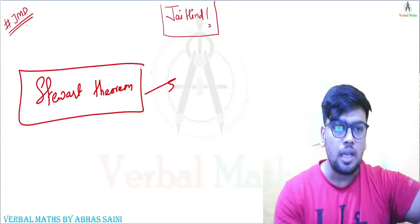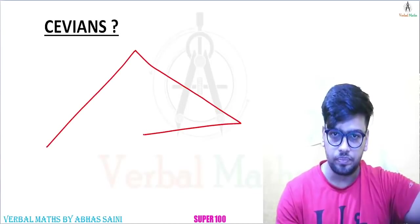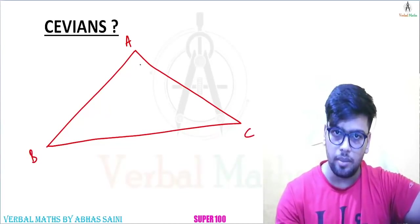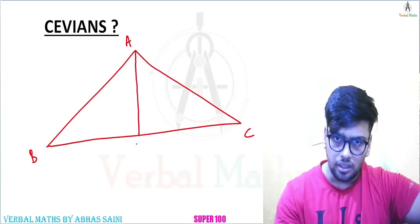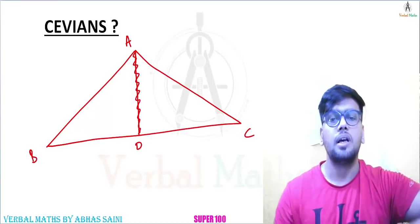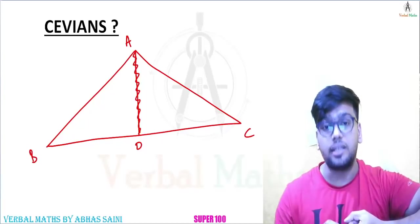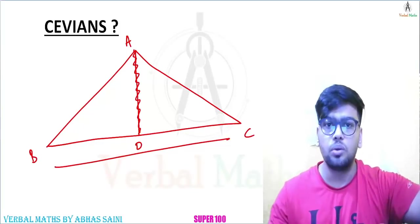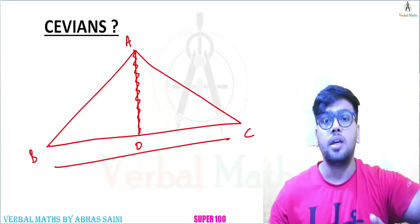First of all let me tell you what a Cevian is. Suppose there is a triangle and I am drawing one line from A to BC, and suppose AD is a straight line. It can be an altitude, it can be a median, it can be any line which divides BC in any ratio. So if I am saying AD is a Cevian, then I am correct.